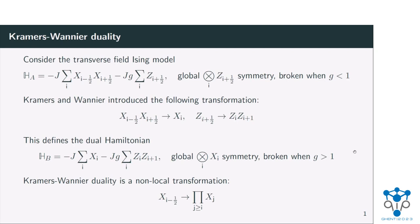This dual Hamiltonian has a global sigma-x symmetry. Note this definition of Kramers-Wannier differs slightly from the one seen before, but this is just up to some local Hadamard. This particular Hamiltonian is symmetry broken whenever g is larger than one. So you see that this transformation maps you from one phase to another phase. Importantly, Kramers-Wannier is a non-local transformation — even though local terms in my Hamiltonian are mapped to local terms in the dual Hamiltonian, if I apply this duality to just a single sigma-x operator, I will get a string of sigma-x operators.